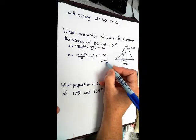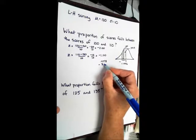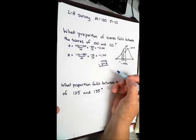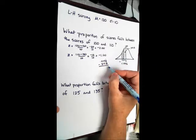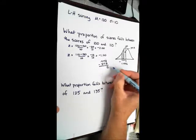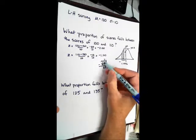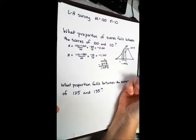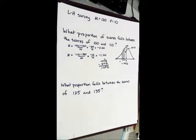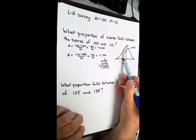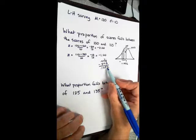We take that 0.4772, which is this big area, and we subtract out the 0.3413, subtract out that little area. What are we left with? We're left with that. That's going to be 0.1359. 0.1359 is the proportion that falls there. The question is asking about it in proportion, not in percentage. So we can say that the proportion that falls between the score of 100 and 110 is 0.1359.